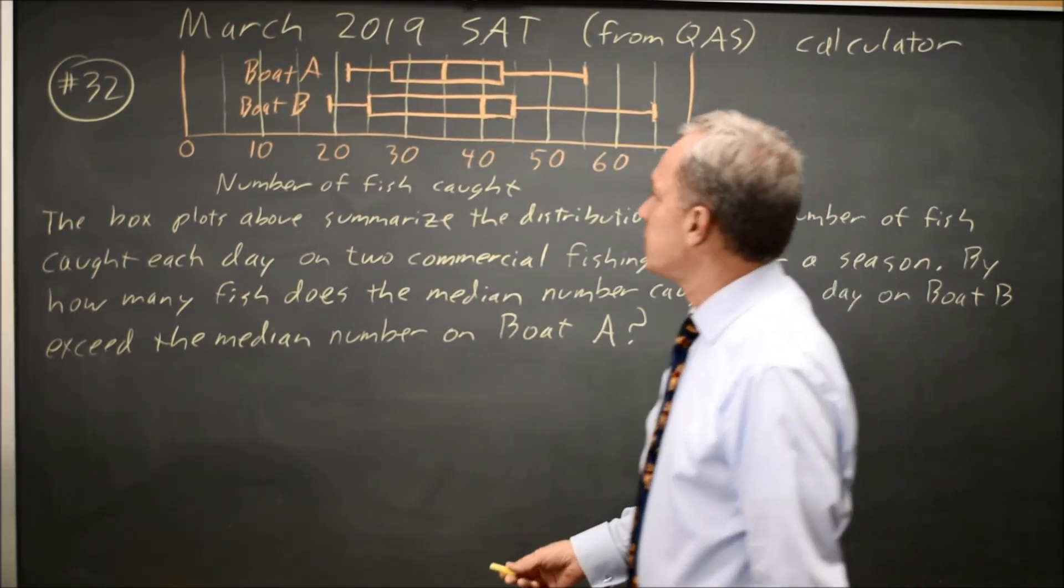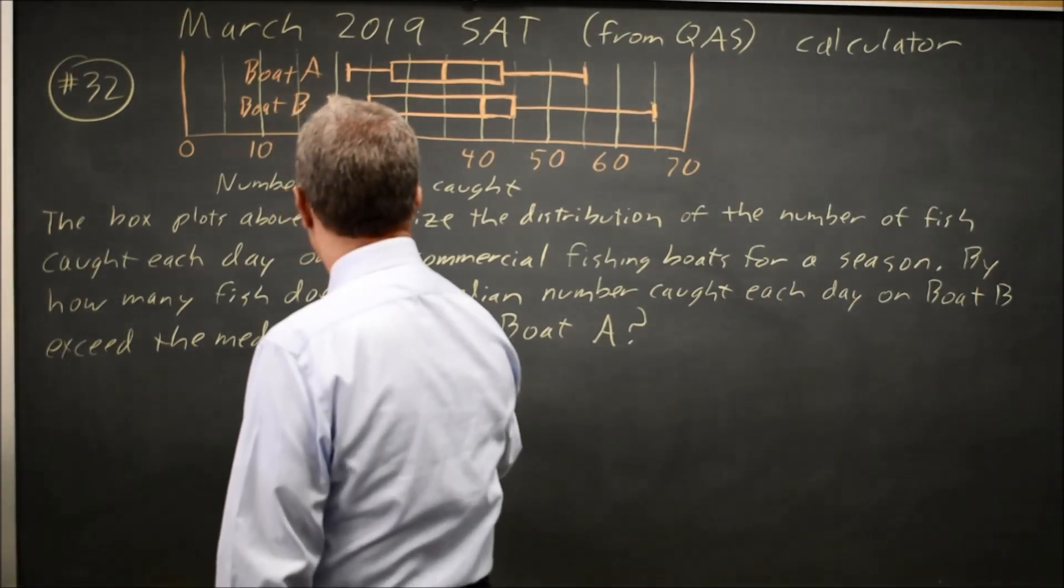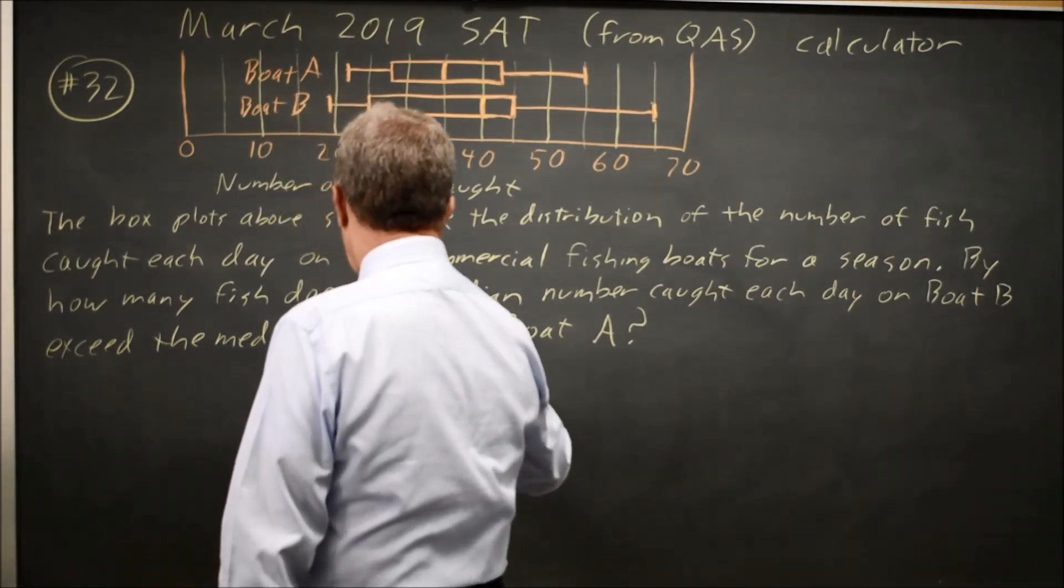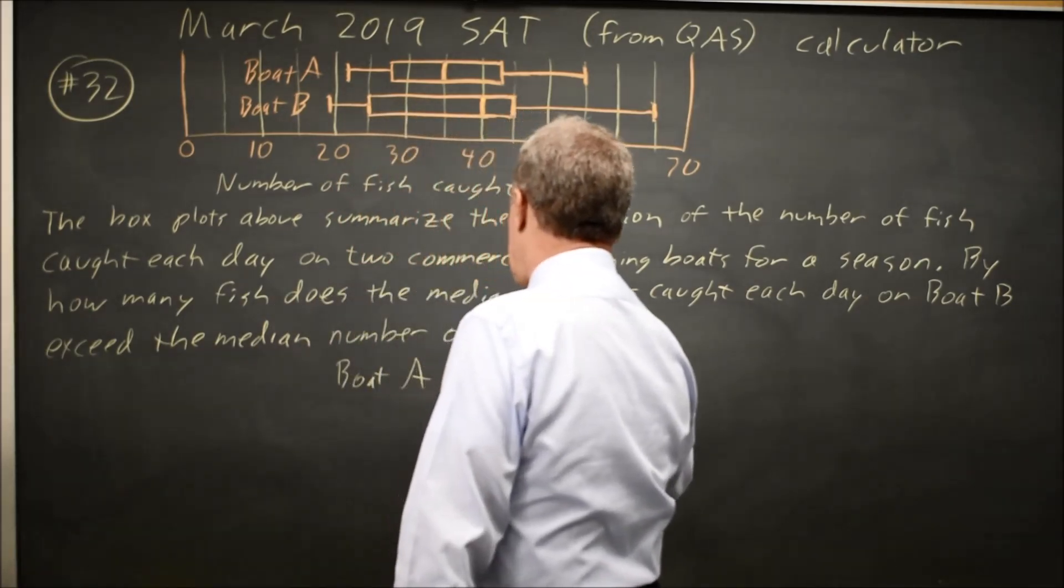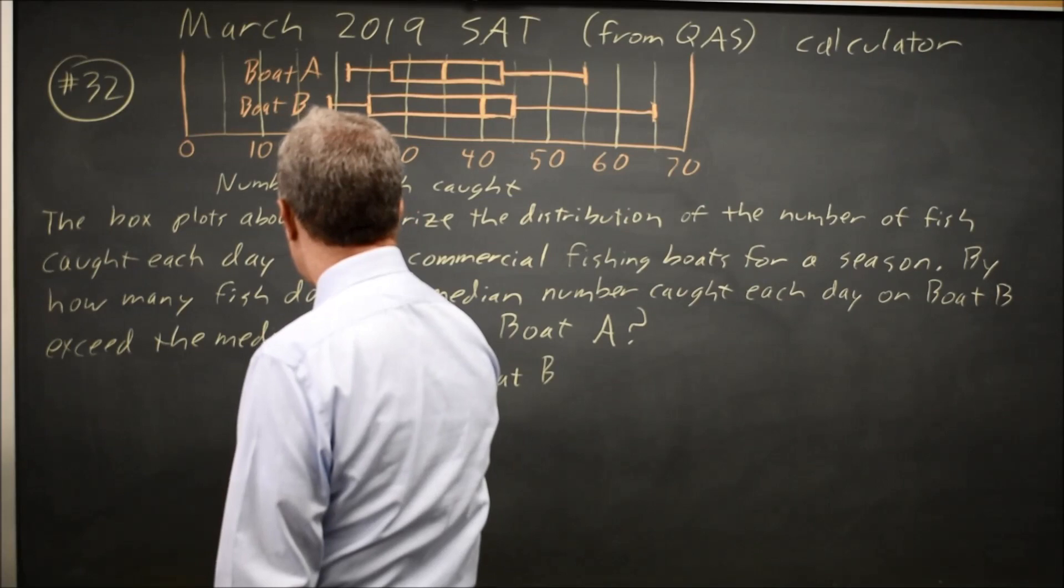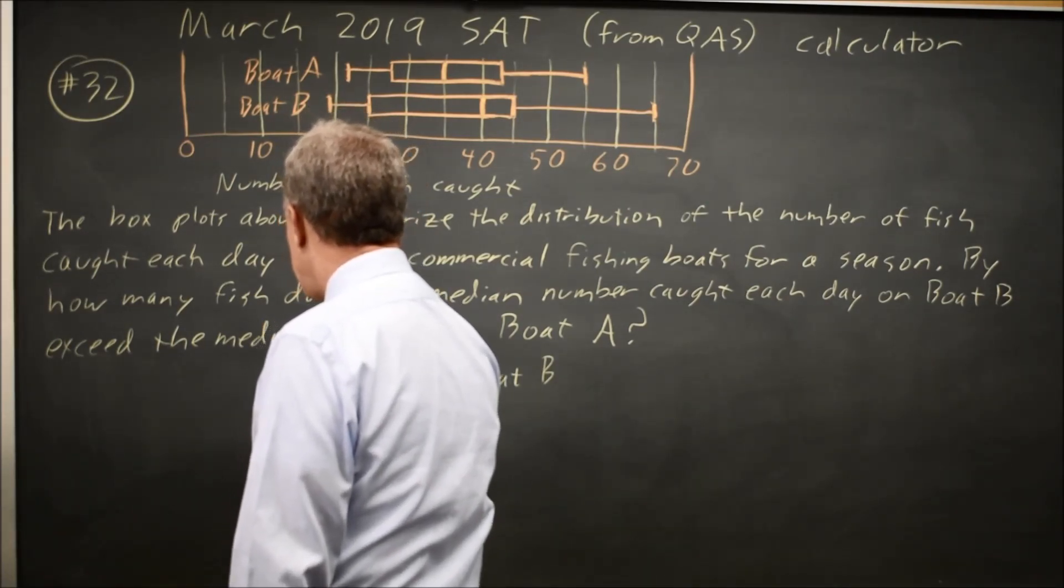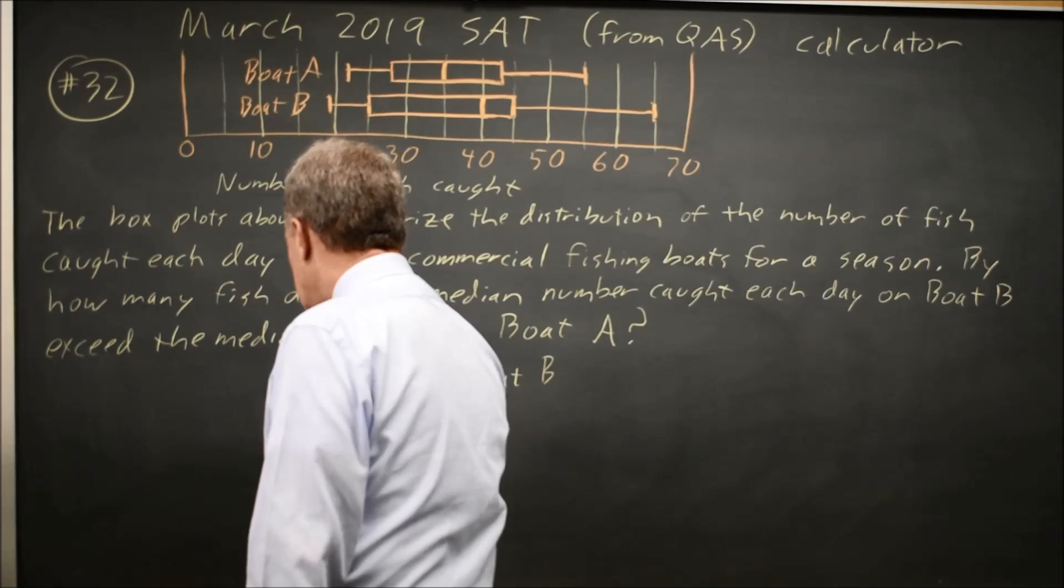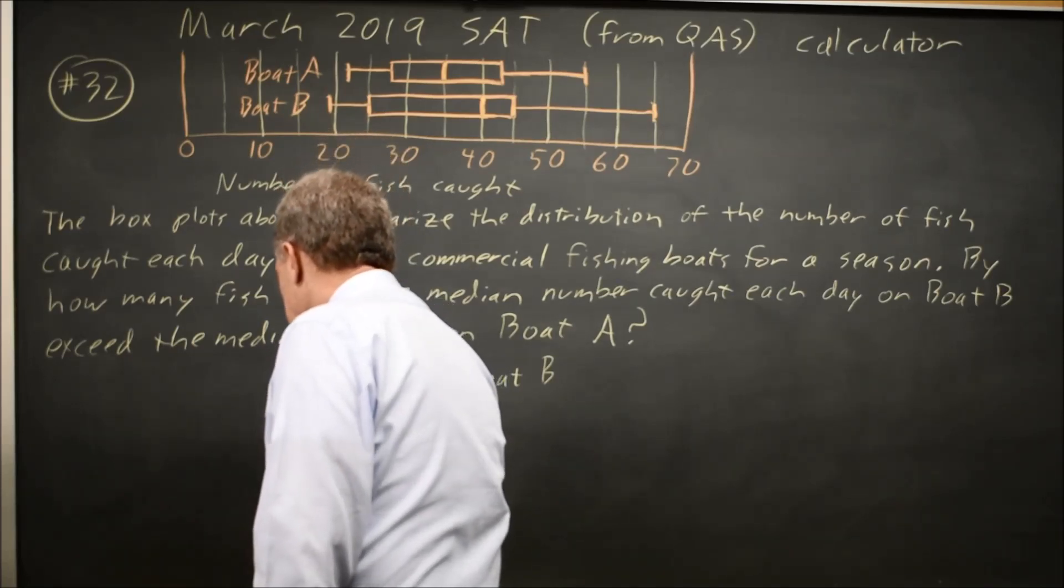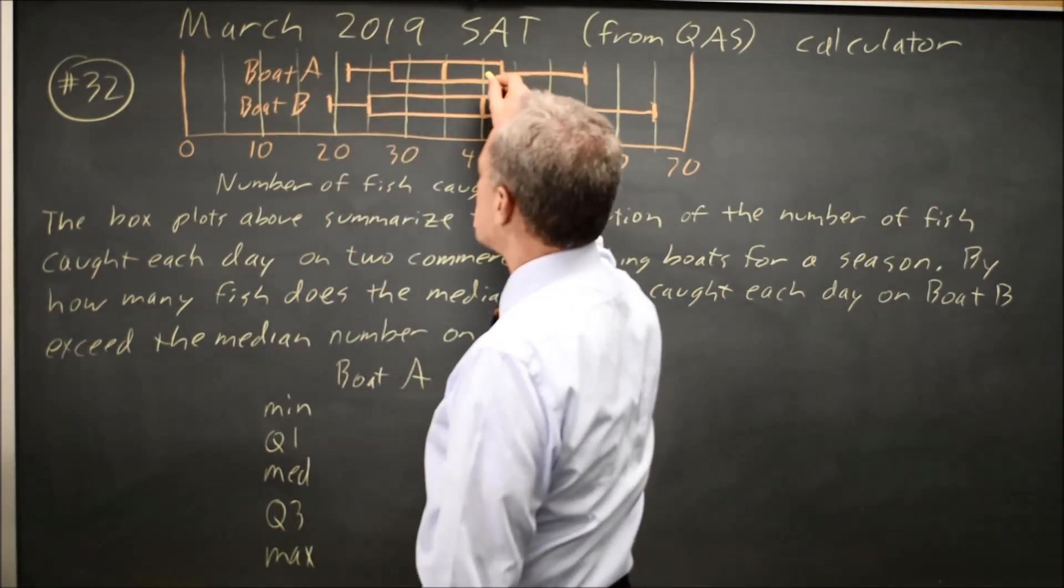I'm going to take out a little more information than I actually need from here. I have boat A, boat B, and there's a five number summary for each with a minimum, first quartile, median, third quartile, and maximum. And those are the five numbers indicated on the box plot.